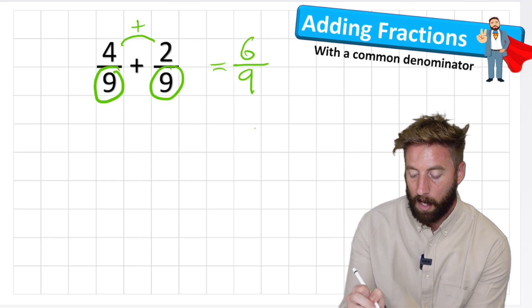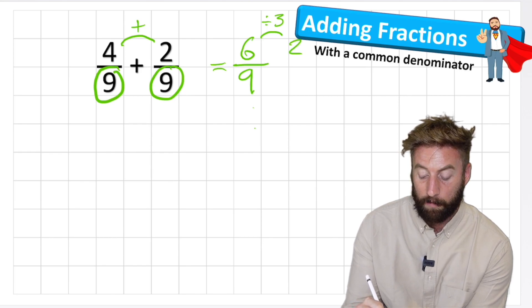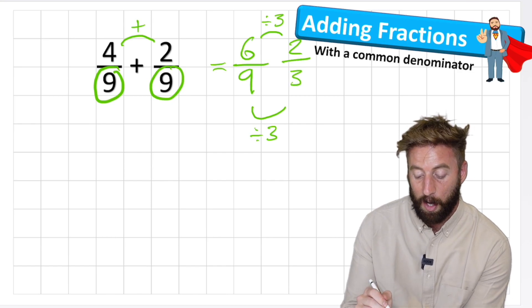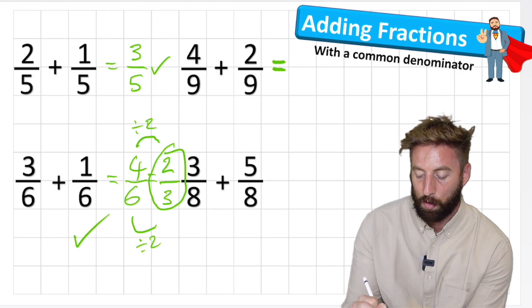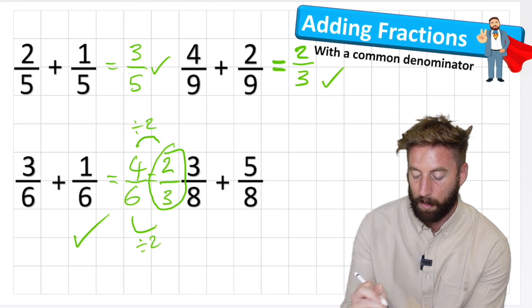I have three. I can divide six by three leaving me two, and I can divide nine by three leaving me three. So four ninths plus two ninths equals two thirds. I can put that into my answer box and give myself another tick.